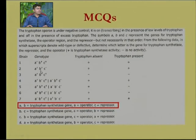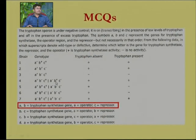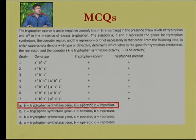Whenever b⁺ is present, tryptophan synthetase activity is seen in the presence or absence of tryptophan. The merodiploids are shown in strains 4 to 7. At least one b⁺ allele results in functional tryptophan synthetase. If b⁻ mutation is present, tryptophan synthetase is not expressed. Therefore, B is tryptophan synthetase, A is the operator, and C is the repressor. The correct option is the first one.